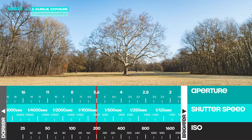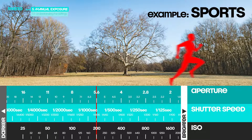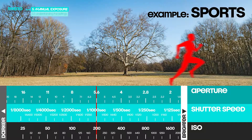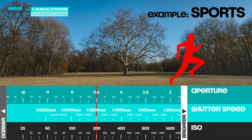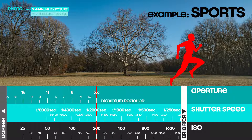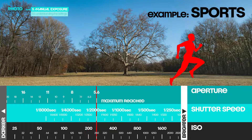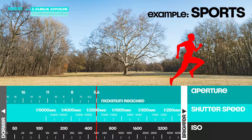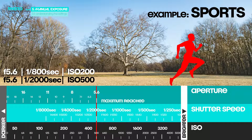What if we need an even faster shutter speed because we're photographing sports and the athletes are moving even faster? We start at 1/800th and want 1/2000th – that's 4 clicks, which is one stop and another third stop. Now we need to compensate for that loss of brightness again. Let's say the kit lens aperture is already at its maximum, so our only option is to raise ISO. Starting at ISO 200, we need 4 clicks and end up at ISO 500. We went from f5.6, 1/800th, ISO 200, to f5.6, 1/2000th, ISO 500.